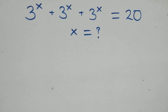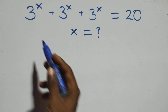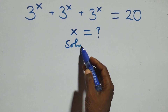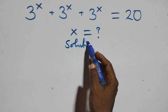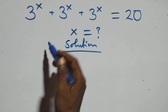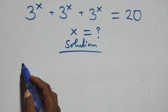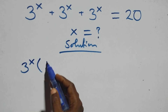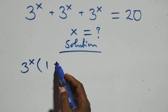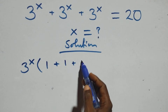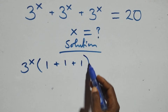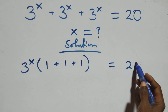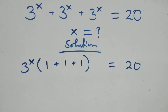Hello, you are welcome. How to solve this nice exponential equation. What we have here is the factor 3 raised to power x times bracket 1 plus 1 plus 1, and on the right side we have equals to 20.